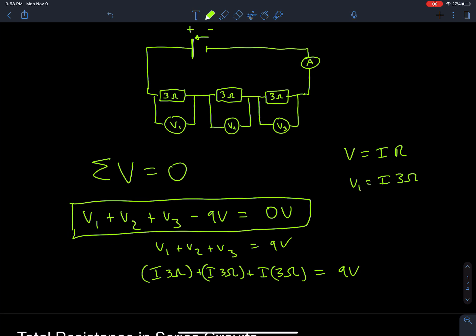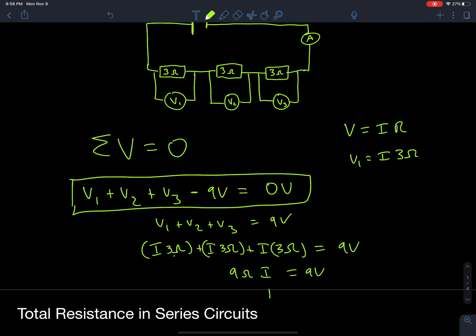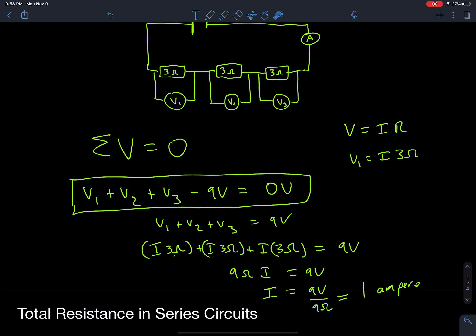Collecting like terms: 9Ω × I = 9 volts, so I = 9 volts ÷ 9 ohms = 1 ampere. That's just using Kirchhoff's law and Ohm's law together — substituting in and solving for the current going through that circuit.